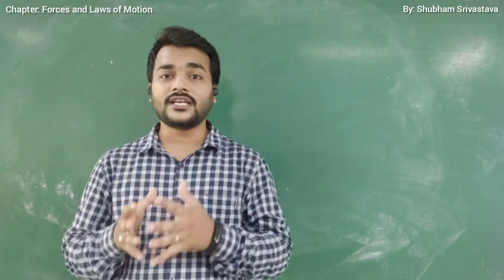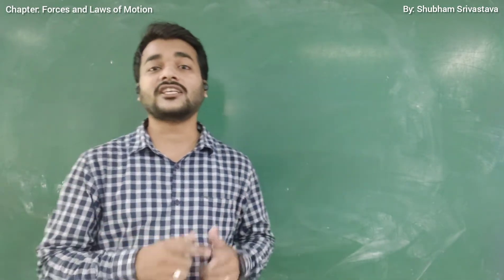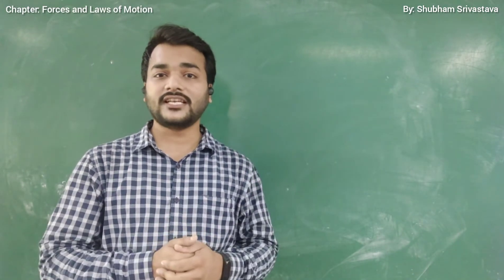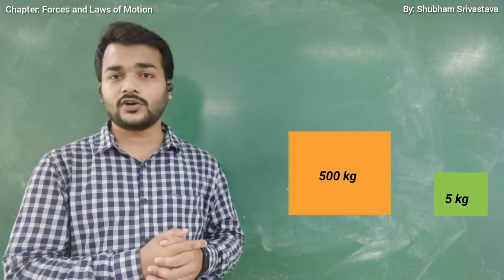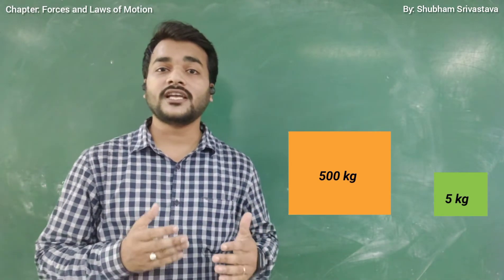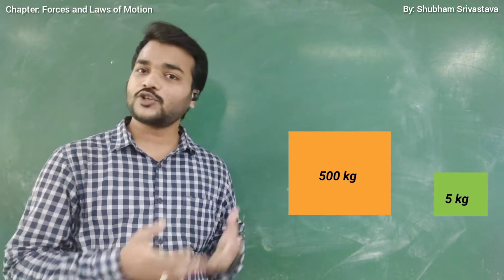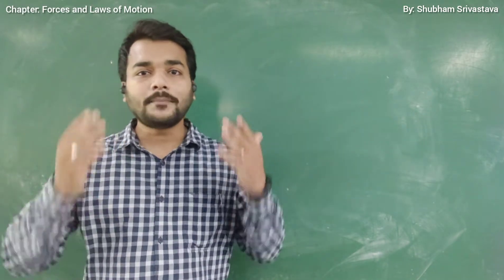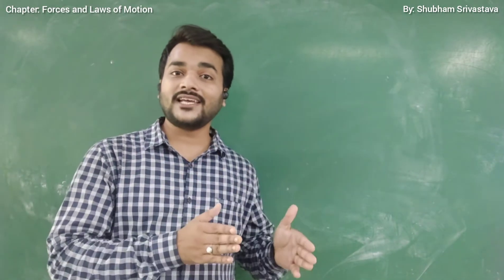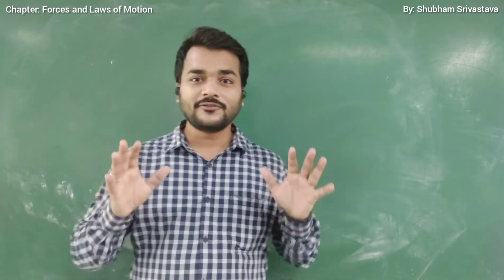This law is related to inertia — it is also called the law of inertia. We have a relationship between inertia and mass of the body, and that relationship is directly proportional: inertia is directly proportional to mass. Greater the mass, greater will be its inertia. For example, consider two objects — one of 500 kg and another of 5 kg. It would be more difficult to bring the 500 kg body into motion, because its greater mass means greater inertia, and greater inertia means it will oppose motion more strongly.